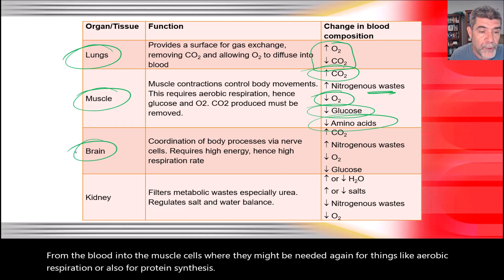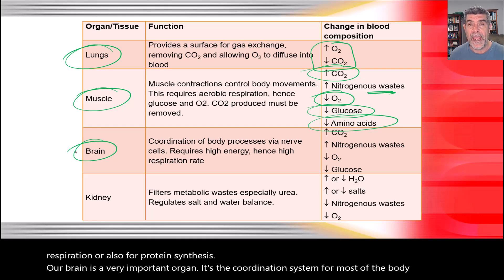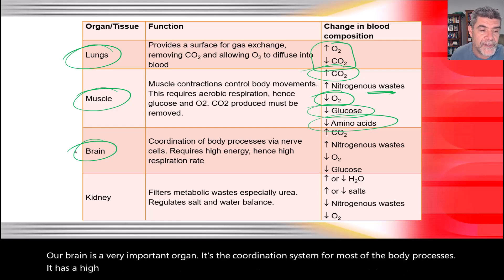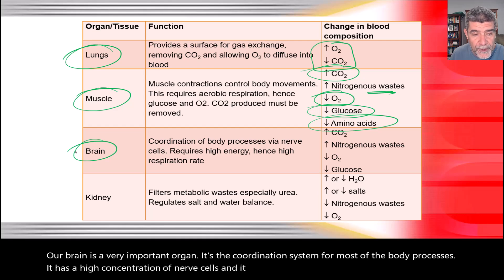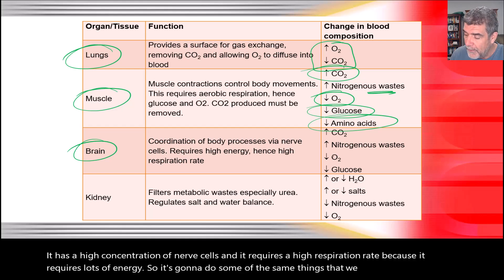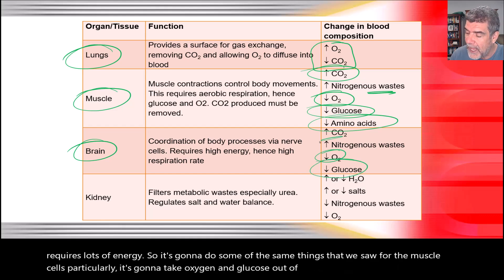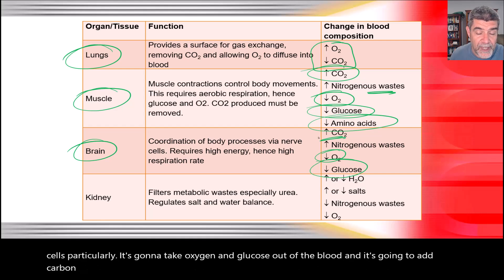The brain is a very important organ — it's the coordination system for most body processes. It has a high concentration of nerve cells and requires a high respiration rate because it needs lots of energy. So it does some of the same things as muscle cells: it takes oxygen and glucose out of the blood and adds carbon dioxide back into the blood.